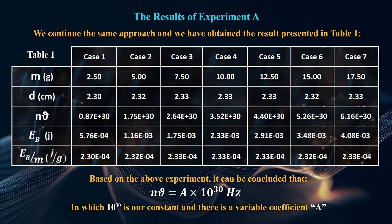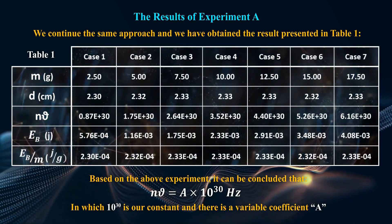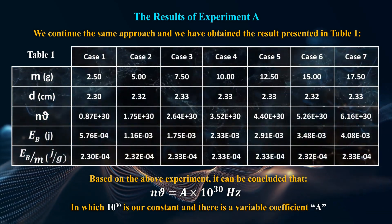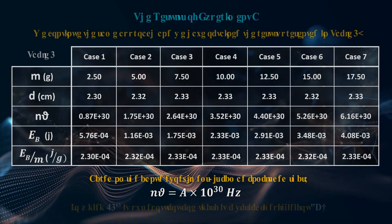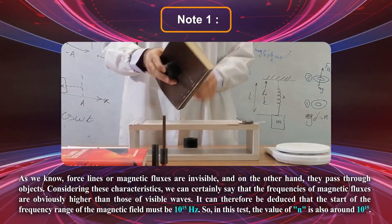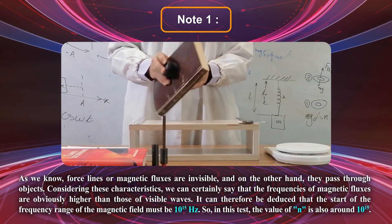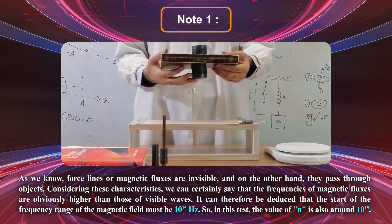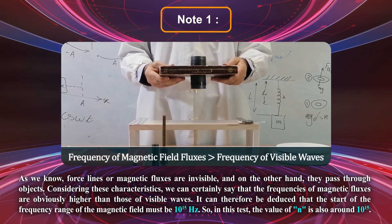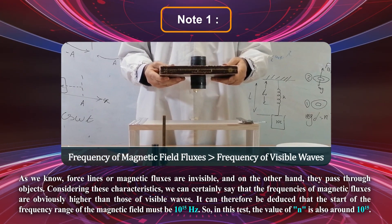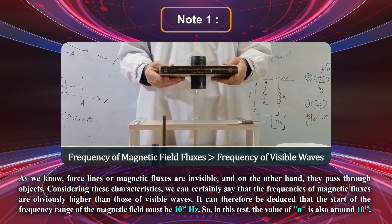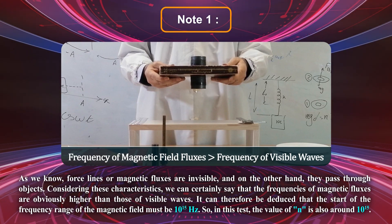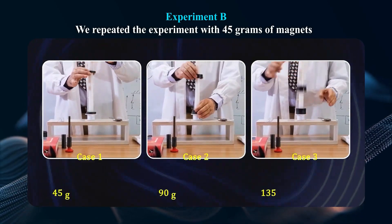It can be concluded that 10 to the power of 30 is our constant, and there is a variable coefficient a. As we know, force lines or magnetic fluxes are invisible and they pass through objects. Considering these characteristics, the frequencies of magnetic fluxes are obviously higher than those of visible waves. It can therefore be deduced that the start of the frequency range of the magnetic field must be 10 to the power of 15 Hz, so the value of N is also around 10 to the power of 15.